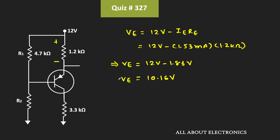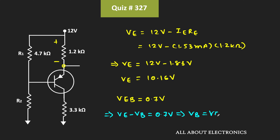In this way, we got the voltage at this node. We have been given that the voltage VEB is equal to 0.7V. From this, we can say that VE minus VB is equal to 0.7V, or base voltage VB equals VE minus 0.7V, that is 10.16V minus 0.7V, which is equal to 9.46V.